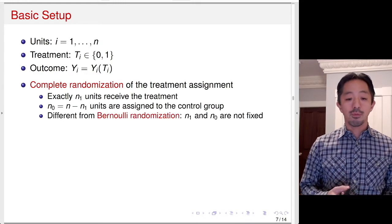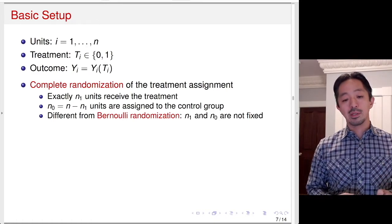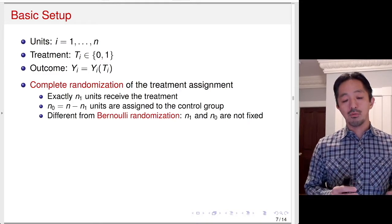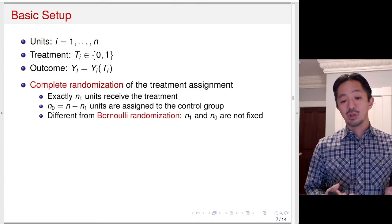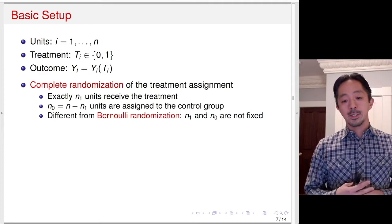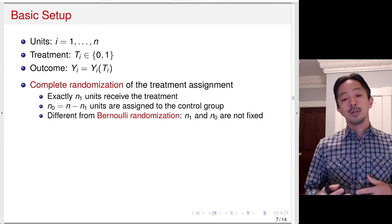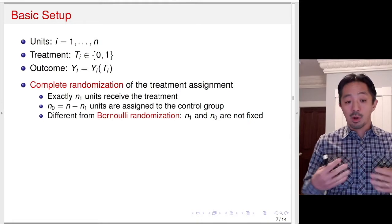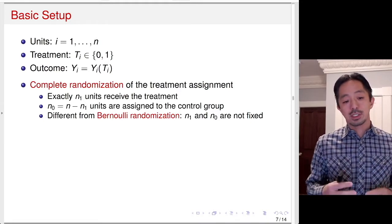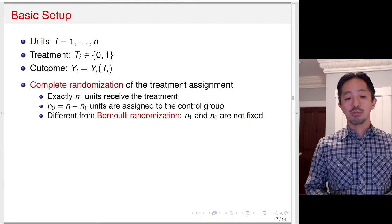This is different from Bernoulli randomization, where each unit flips a coin. In that case, N1 (the number of treated units) and N0 (the number of control units) are not fixed — by chance you can get a different number in each group. However, complete randomization fixes the size of the treatment group and control group ahead of time.